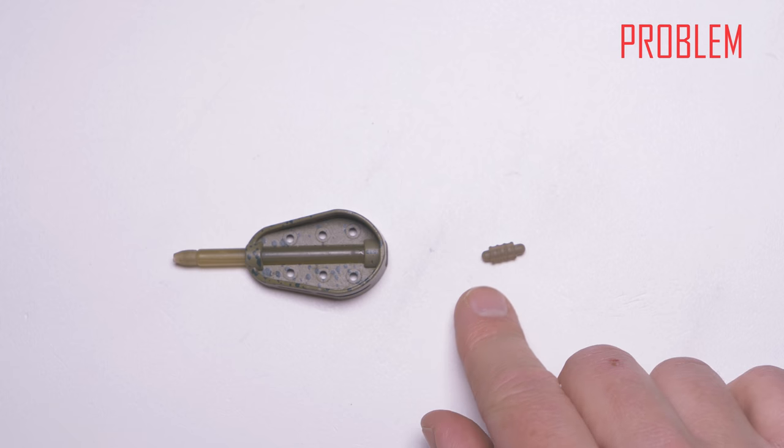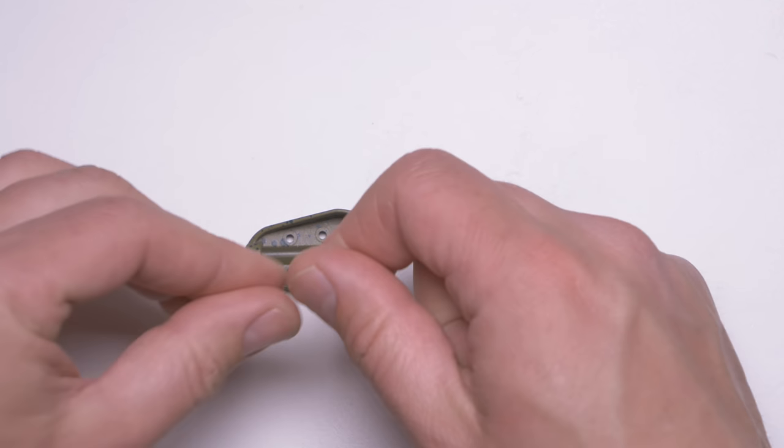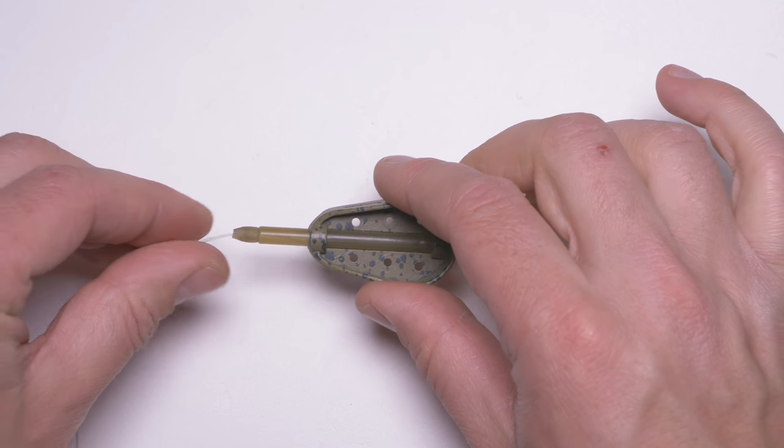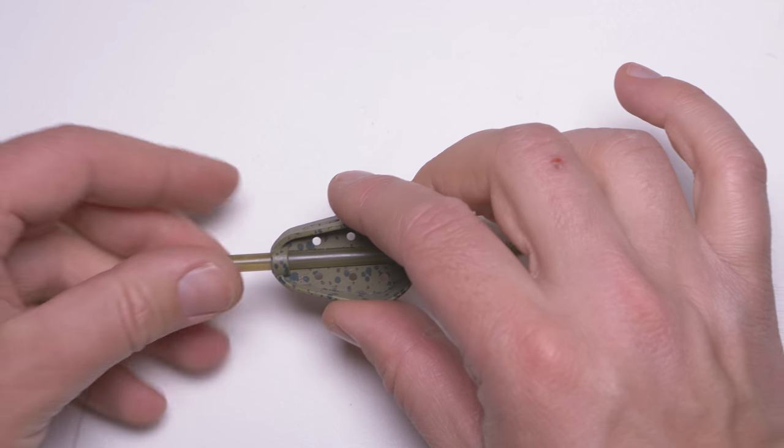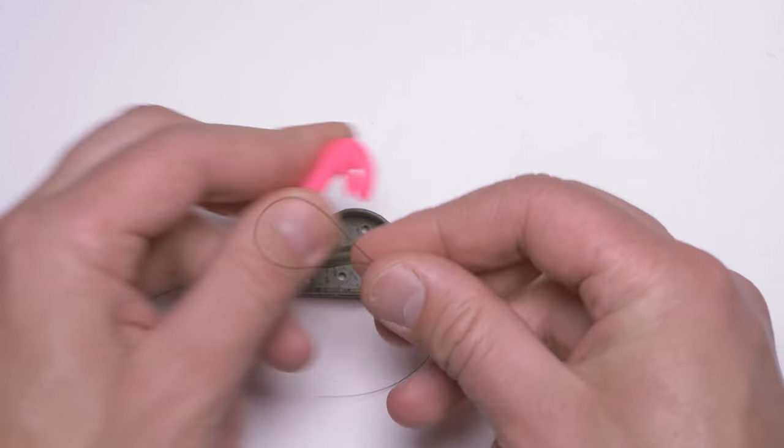I will take my mainline, thread my feeder on it, and then make a small loop at the end.